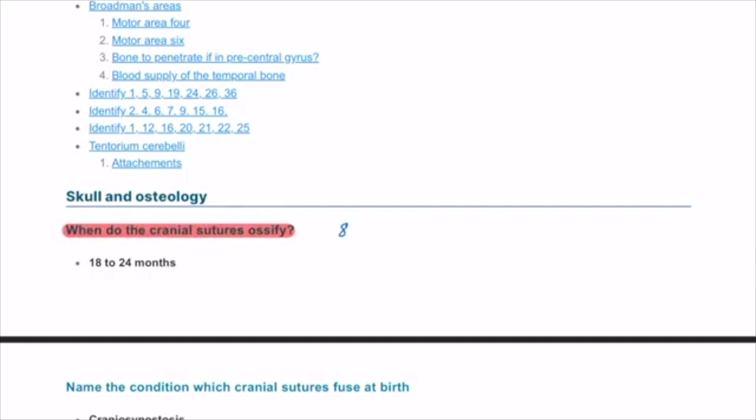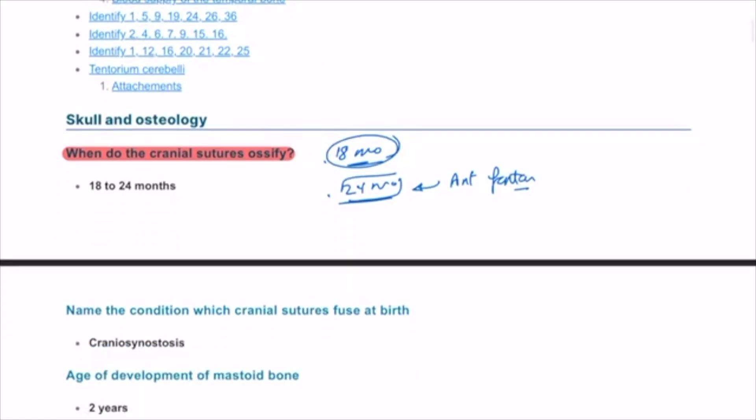It's usually at 18 months, starting at 18 months to 24 months for the anterior fontanel. So the anterior fontanel is usually at 24 months and 18 months for the posterior fontanel.